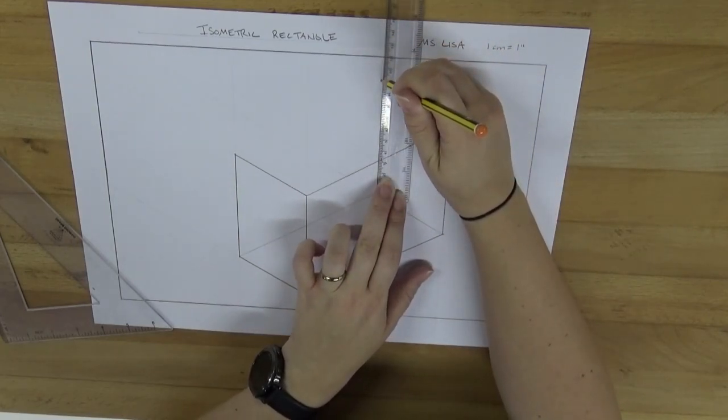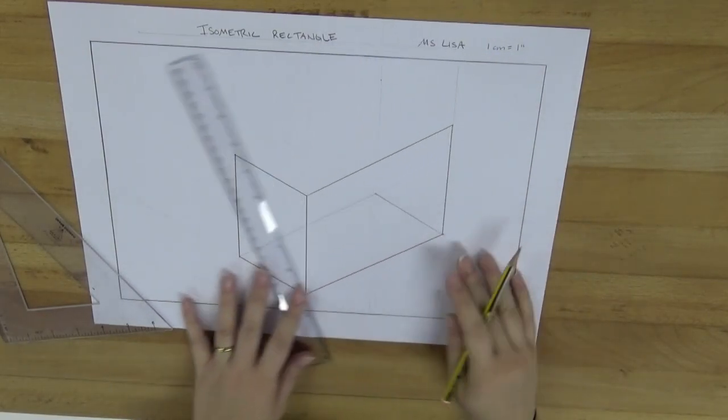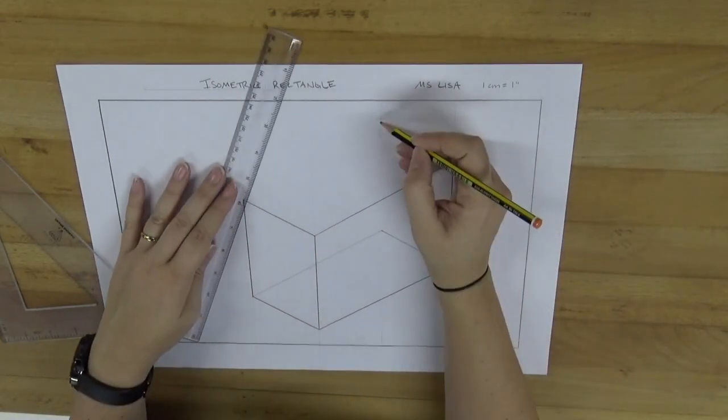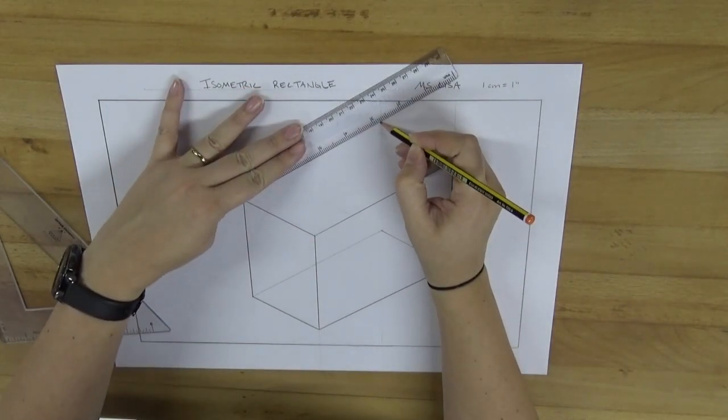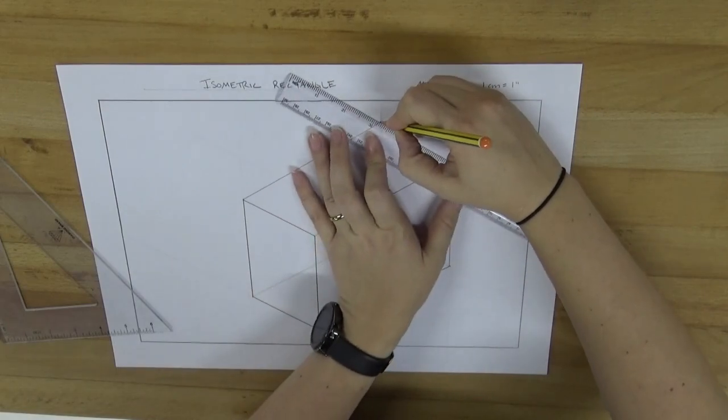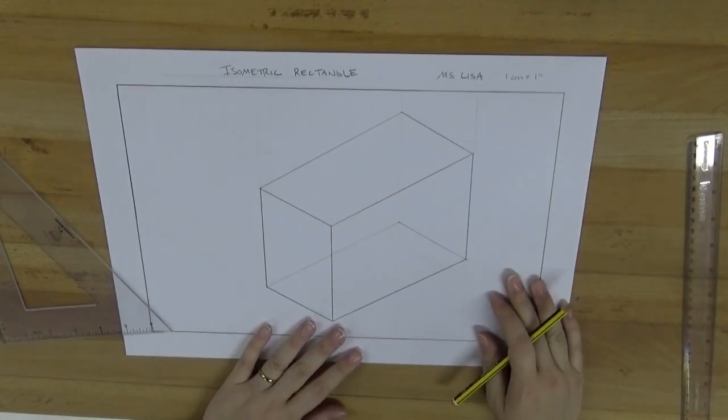So now I have three dots—one right here, here, and here—that will form the top of our box. And there you have it, an isometric rectangle.